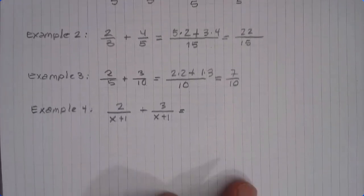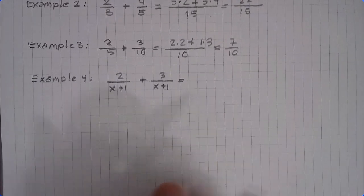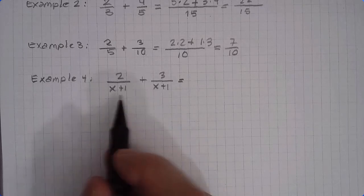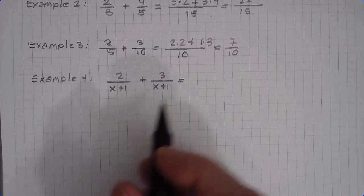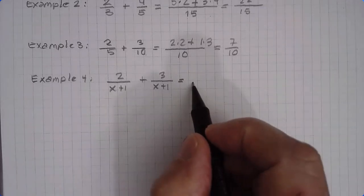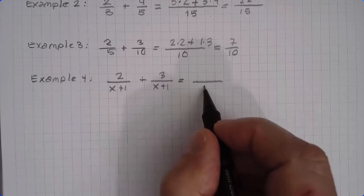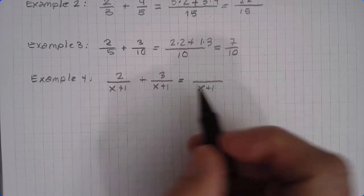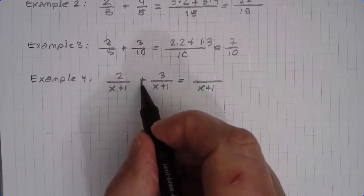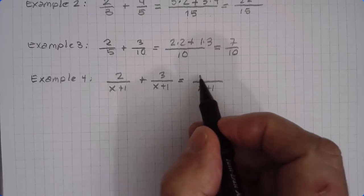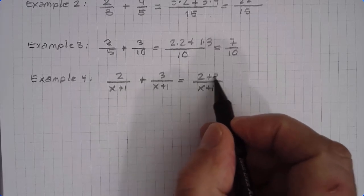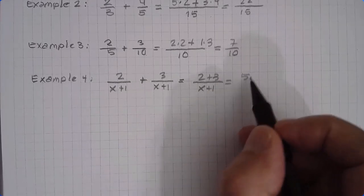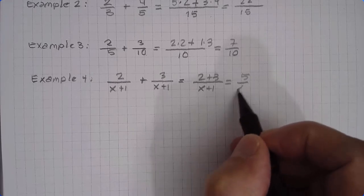If the denominators have algebraic expressions but they happen to be equal — the same — then that is our common denominator, x plus 1. You add 2 plus 3, which is 5, and you end up with 5 over x plus 1.